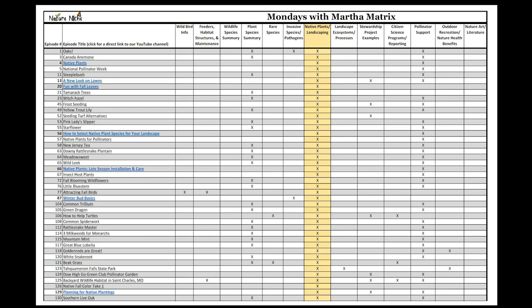The seventh category covers native plants and native plant landscaping. It has lots of species-specific info but also helpful basics like what are native plants and why should we use them, a new look at lawns and how we can replace them with more native plantings, fun facts about fall leaf color, how to select native plant species for your own landscape, great late-season installation tips and care for late summer and early fall, how to identify plants by their winter buds, and how to start planning a native planting.